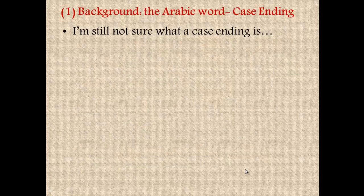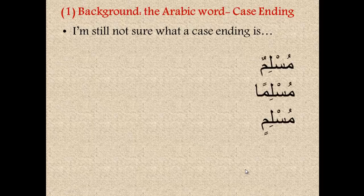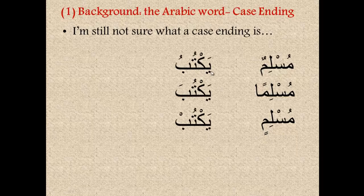You might still be a little confused about what a case ending means, so let's consider a few examples. We have the words muslimun, musliman, and muslimin. All three words mean Muslim, but notice how the endings are different — we have a dhammatan, a fathatan, and a kasratan. Similarly, the word yaktub, meaning 'he writes' or 'he is writing,' is a verb. We can have three versions: yaktubu, yaktuba, and yaktub. Again, the endings are different — we have a dhamma, a fathah, and a sukun.